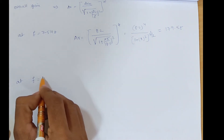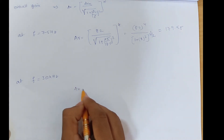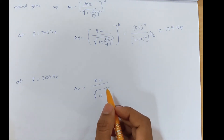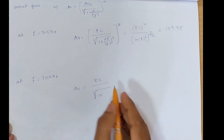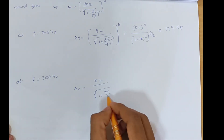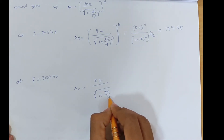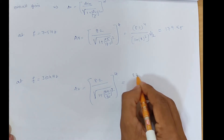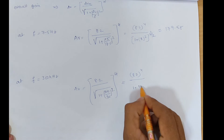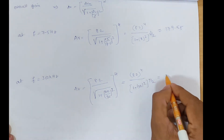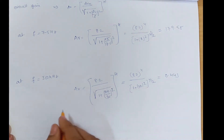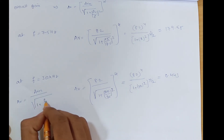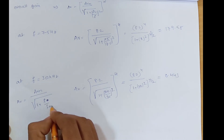Next, we calculate at f = 300 kHz. AV = 8.2 ÷ √(1 + (f/FH1)²), raised to power 4. Here the high frequency is 300 kHz and FH1 is 30 kHz, so f/FH1 = 10. AV = 8.2^4 ÷ √(1 + 10²)^4 ÷ 2, giving approximately 0.443.